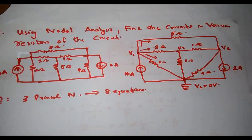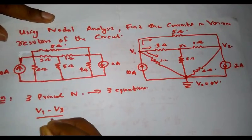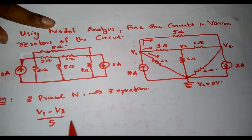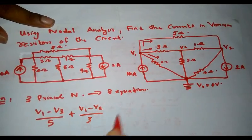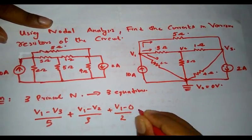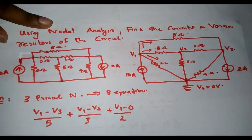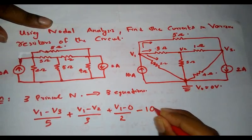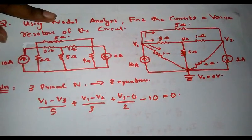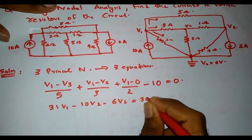According to Kirchhoff's current law, the algebraic sum of inward and outward currents is equal to zero. The current through the 5 ohm resistor is (V1 - V3)/5. The current through the 3 ohm resistor is (V1 - V2)/3. The current through the 2 ohm resistor is (V1 - 0)/2. The current source of 10 A is inward, so it carries a negative sign: minus 10 = 0. This equation simplifies to 31V1 - 10V2 - 6V3 = 300. Let this be equation number 1.